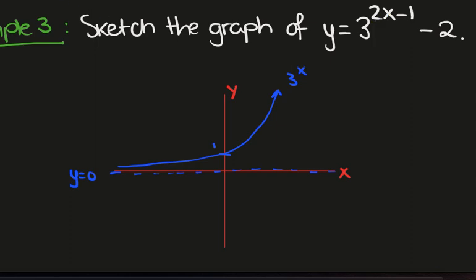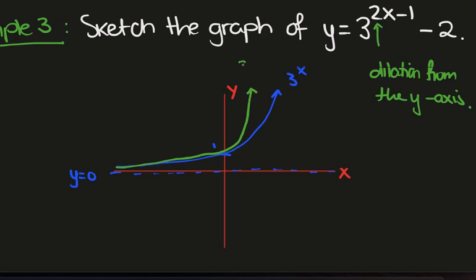Next we'll sketch y is equal to 3 to the power of 2x. And that's just going to force everything to grow a bit quicker. So this 2 is a dilation from the y-axis. And so the resulting graph that we'll get is maybe not that steep, but something like this. So this is 3 to the 2x.